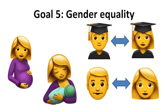Sustainable development goal 5 is to achieve gender equality and empowerment of women and girls. Of the nine targets, six are outcome targets that call for equal opportunity for women and girls. Specifically, the targets are ending all forms of discrimination against all women and girls everywhere, ending violence and exploitation of women and girls, and eliminating harmful practices such as child early and forced marriage and genital mutilation.